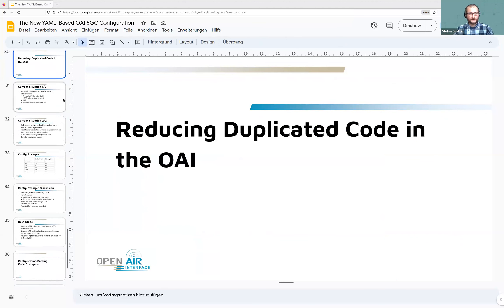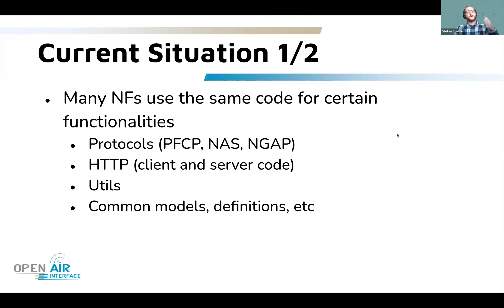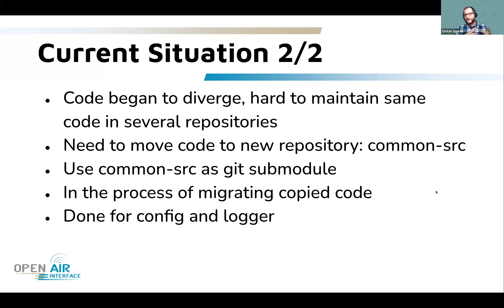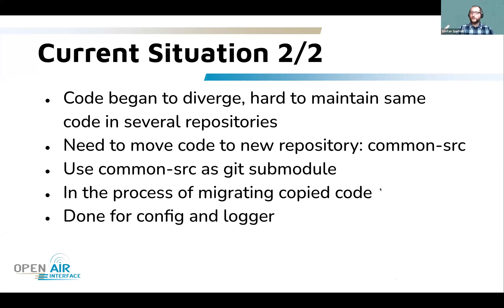Before the Q&A, a bit more about reducing duplicated code in the OEI 5GC. The current situation is that many NFs use the same code for PFCP (used in SMF and UPF), HTTP utilities used everywhere, common models, and definitions. The code has started to diverge over two years — you change a little here and there and it's hard to maintain the same code across several repositories. That's why we created the common source repository. It's not only for config — it's for everything, used as a Git submodule. We are now migrating copied code, and the config and logger migrations are already done.